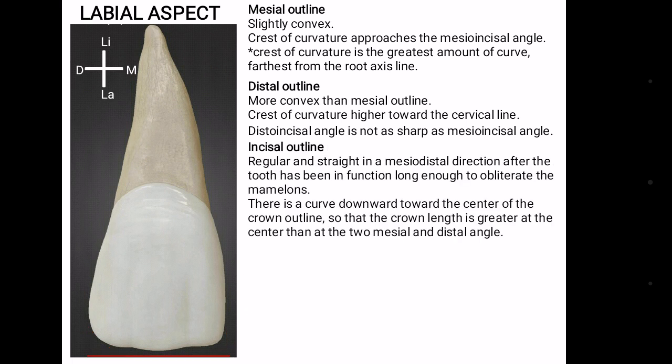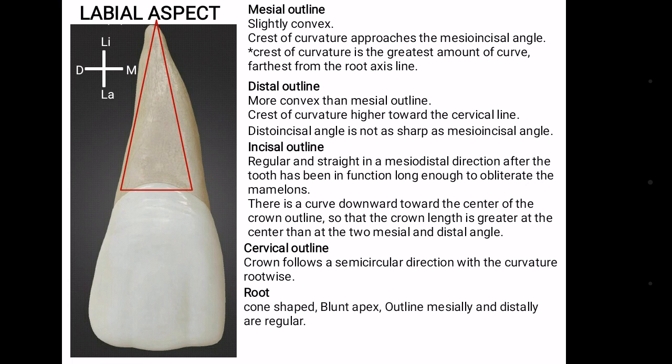Incisal outline is regular and straight once the mamelons are obliterated with age. There is a curve downwards towards the center, so the crown length is greater at the center than at the two mesial and distal angles. The cervical outline is semicircular and follows the root. Root is cone shaped with blunt apex and mesial and distal outlines regular.